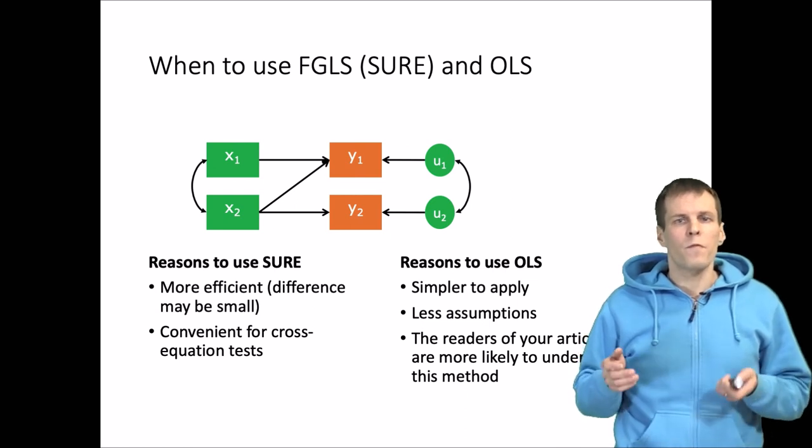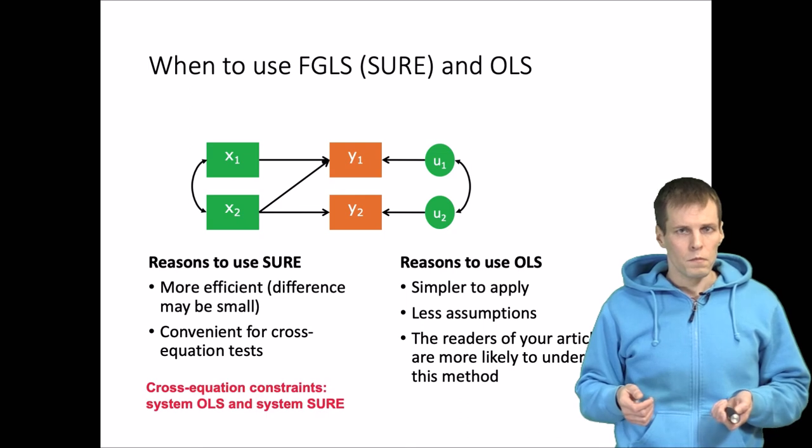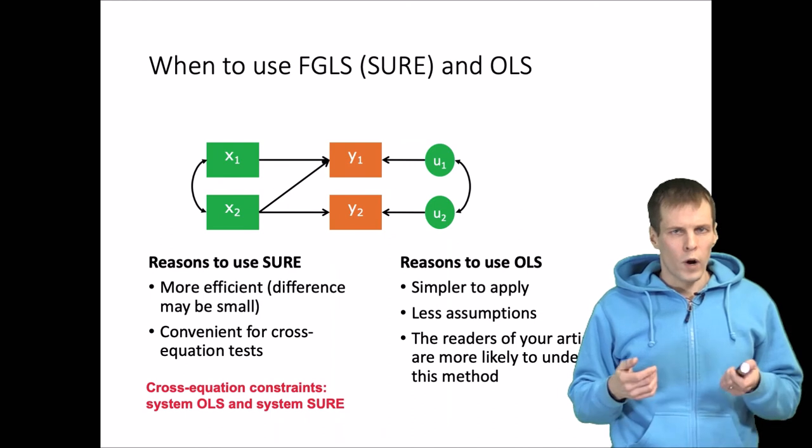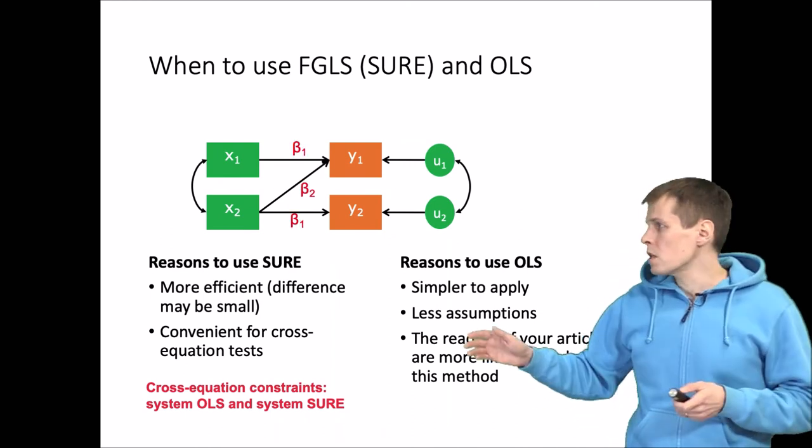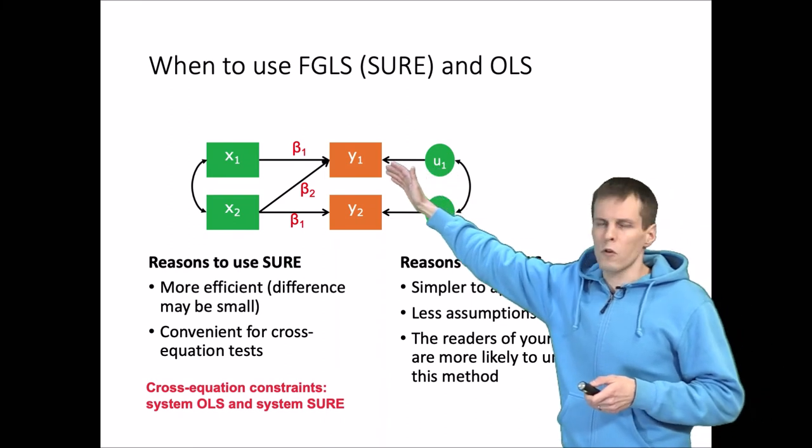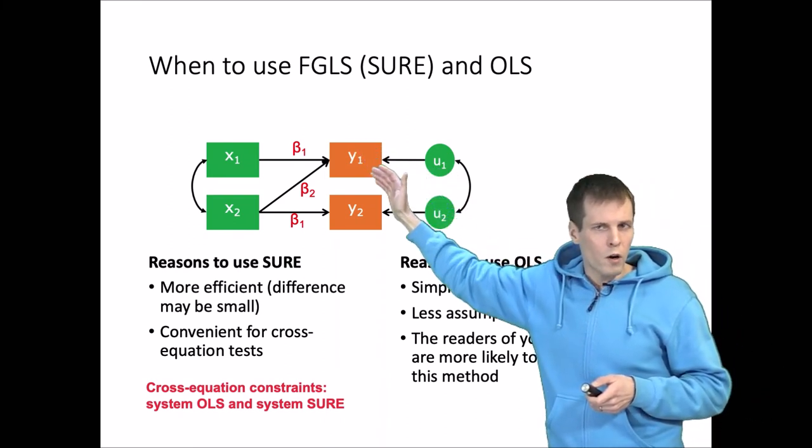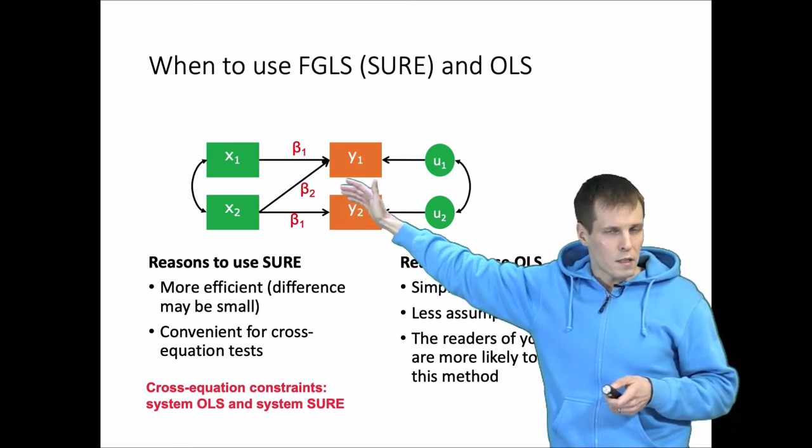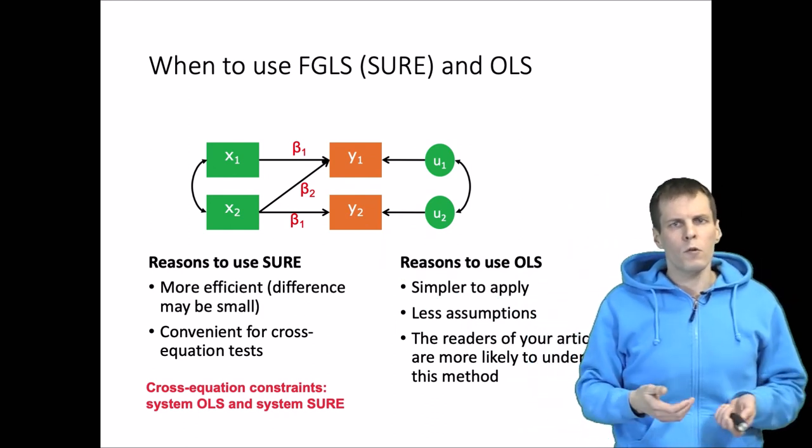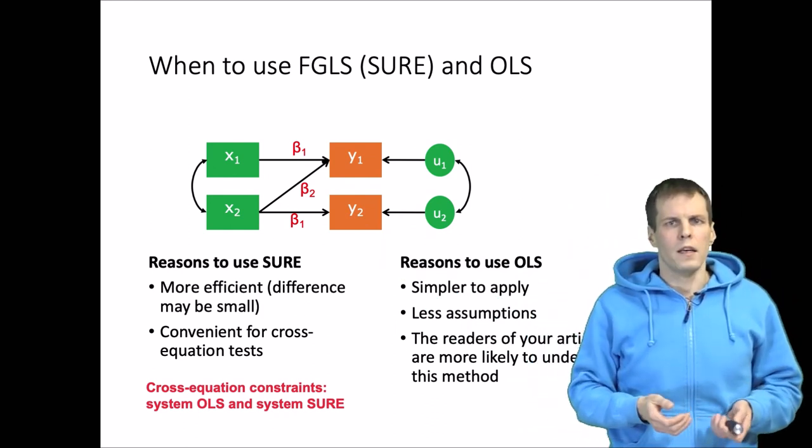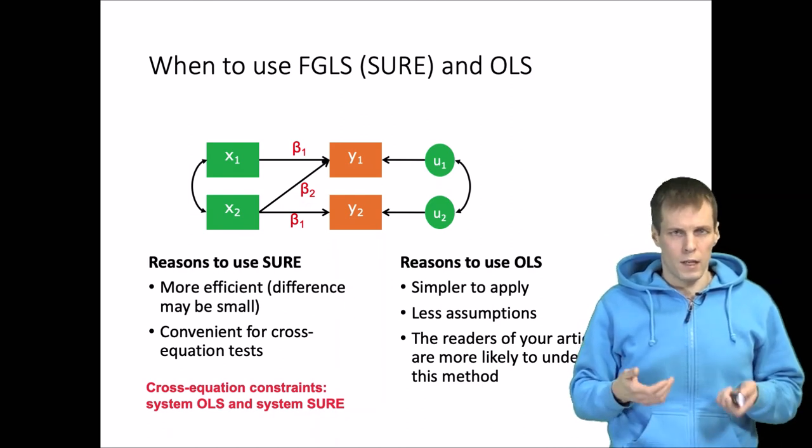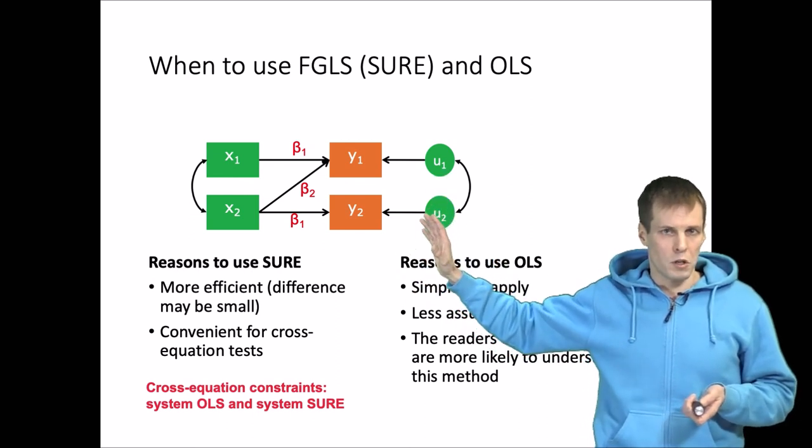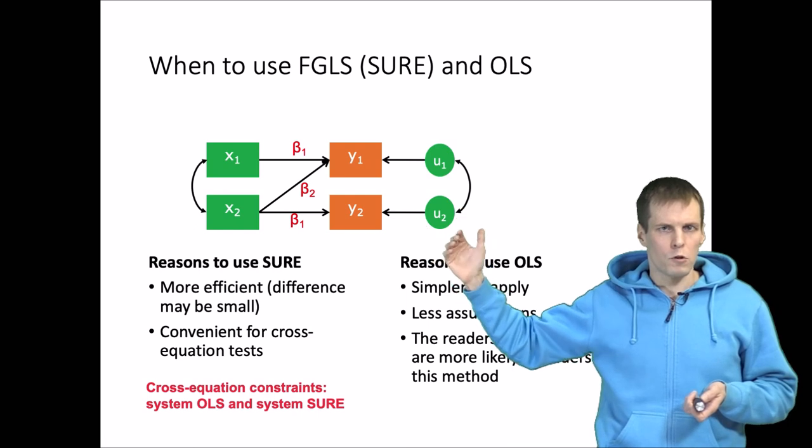There are a couple of things that you need to understand about these techniques as well. Both of these techniques support cross-equation constraints, so we can for example constrain the regression paths of x1 on y1 and x2 on y2 to be equal at beta 1 and then allow this third path to be estimated freely. So we can do both these constraints. It gets a bit technical, but it can be done using both estimates and approaches. Of course, then with OLS we would not be estimating one equation at a time anymore, but we would be estimating something called system OLS.